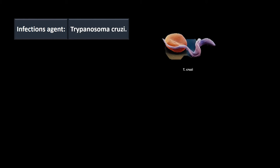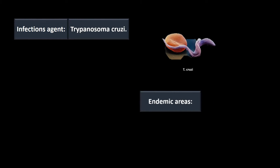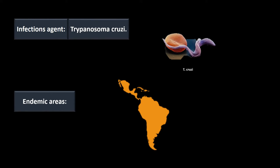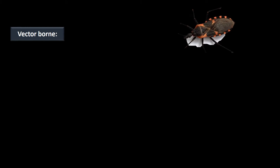It can get into dogs, cats, rats, mice, and all sorts of animals. It's endemic to South and Central America and Mexico, and we're starting to see it in the southern states like Southern California, Texas, Alabama, and Florida. This is a vector-borne disease.